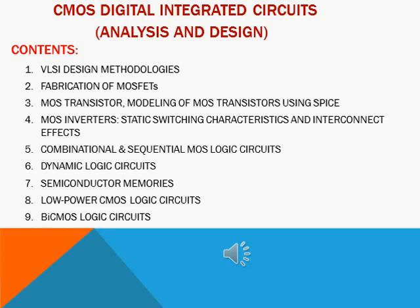Fourth is MOS inverters — static and switching characteristics as well as interconnect effects. In this we go through different types of NMOS inverters like resistive load inverter, enhancement load inverter, depletion load inverter, as well as we will see how the CMOS inverter is better than the NMOS inverter. We go through its static and switching characteristics as well as the delay calculation of the CMOS inverter. Estimation of interconnect parasitic and calculation of interconnect delay is also covered. Switching power dissipation of CMOS inverter is also covered.